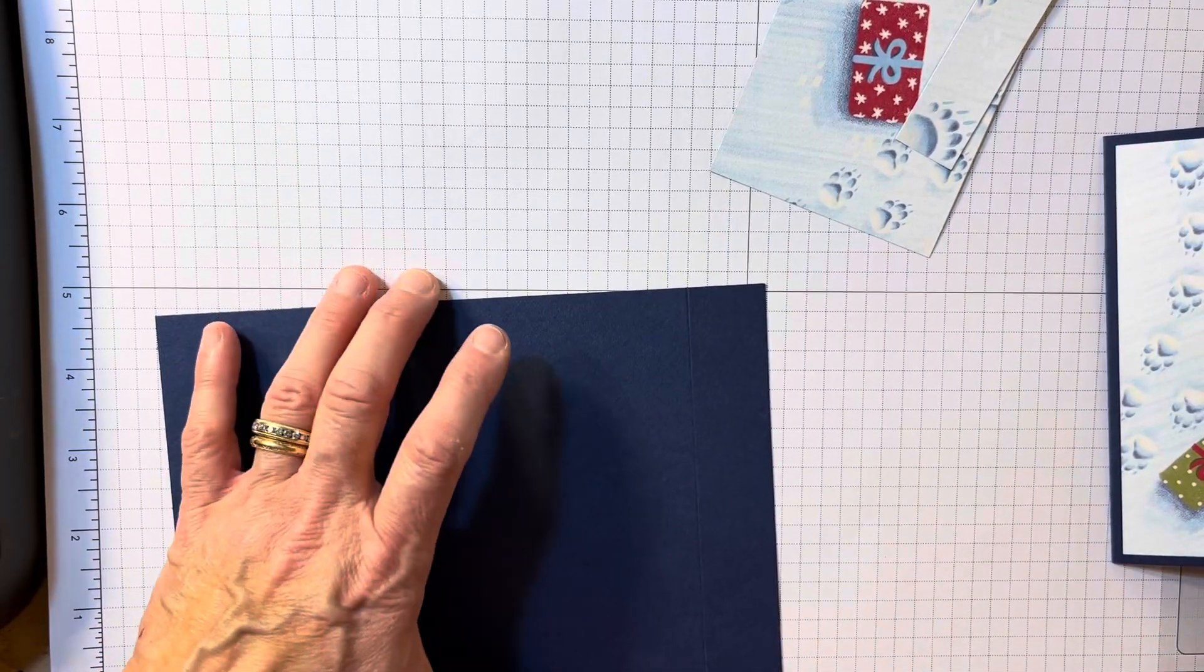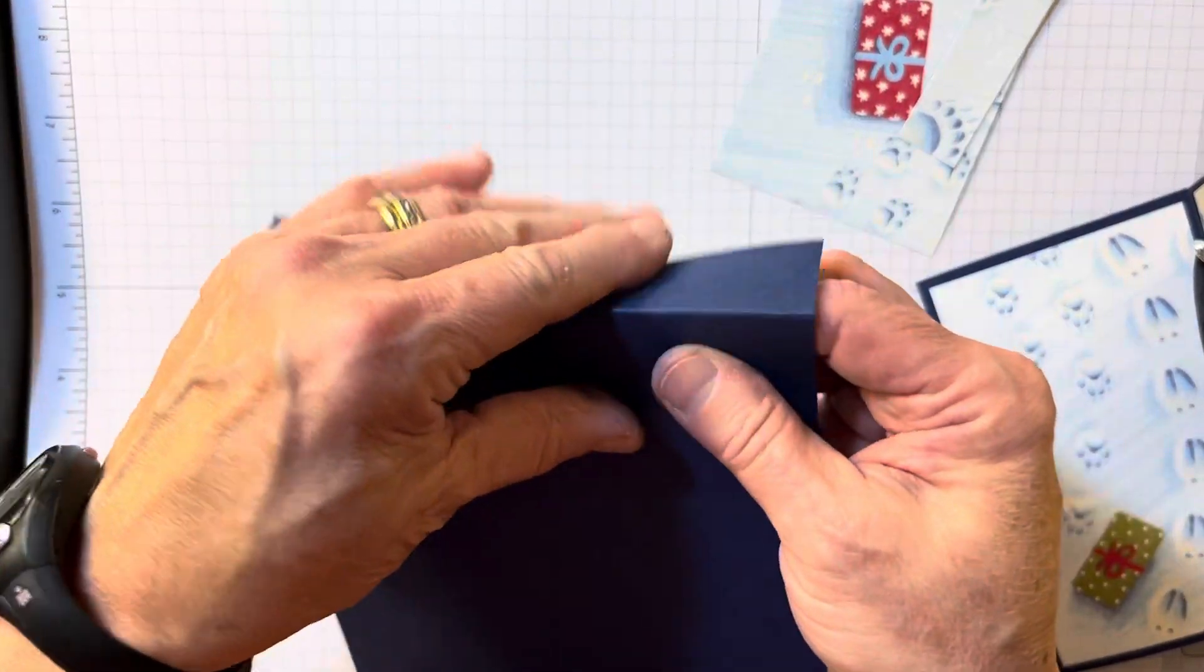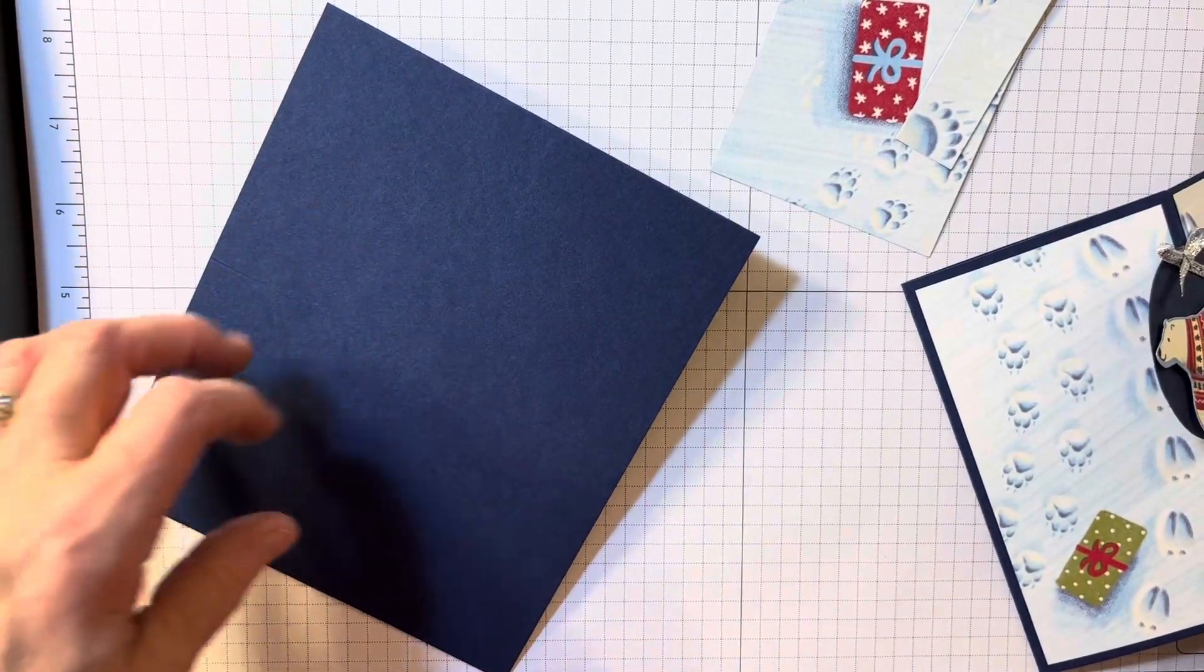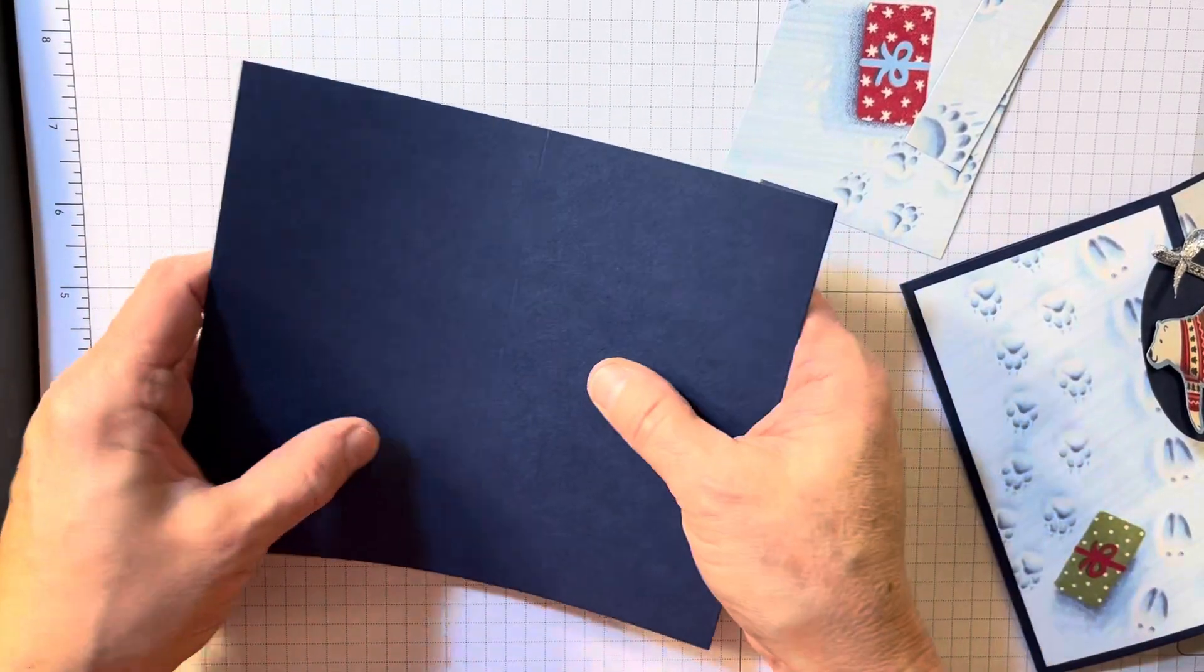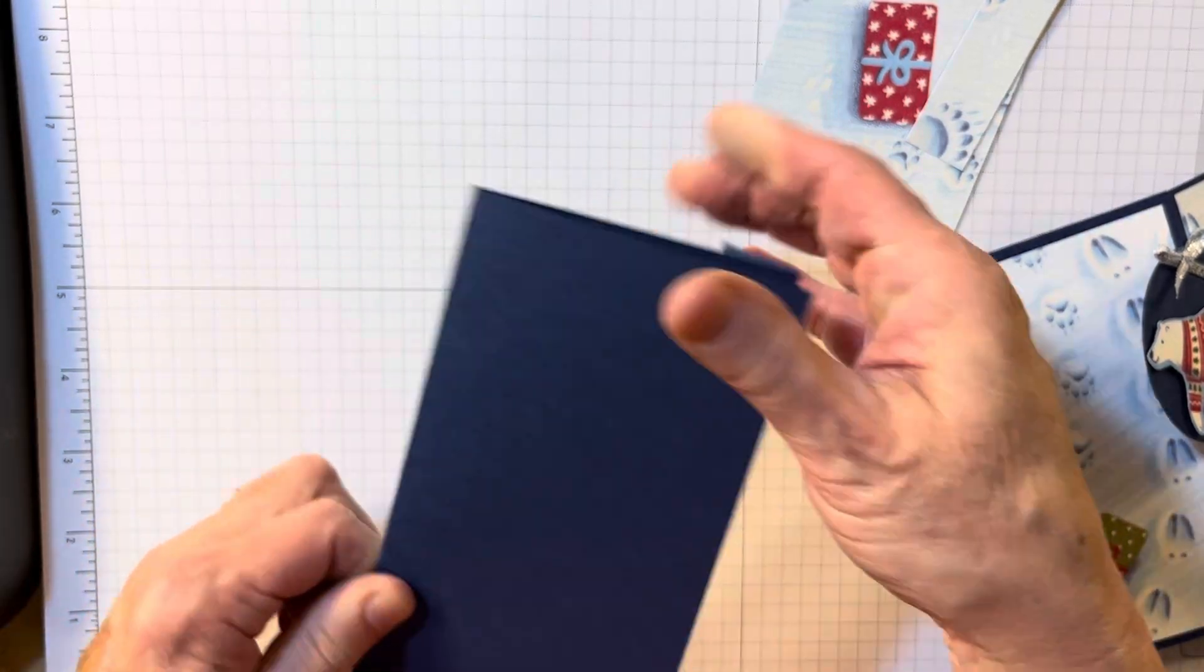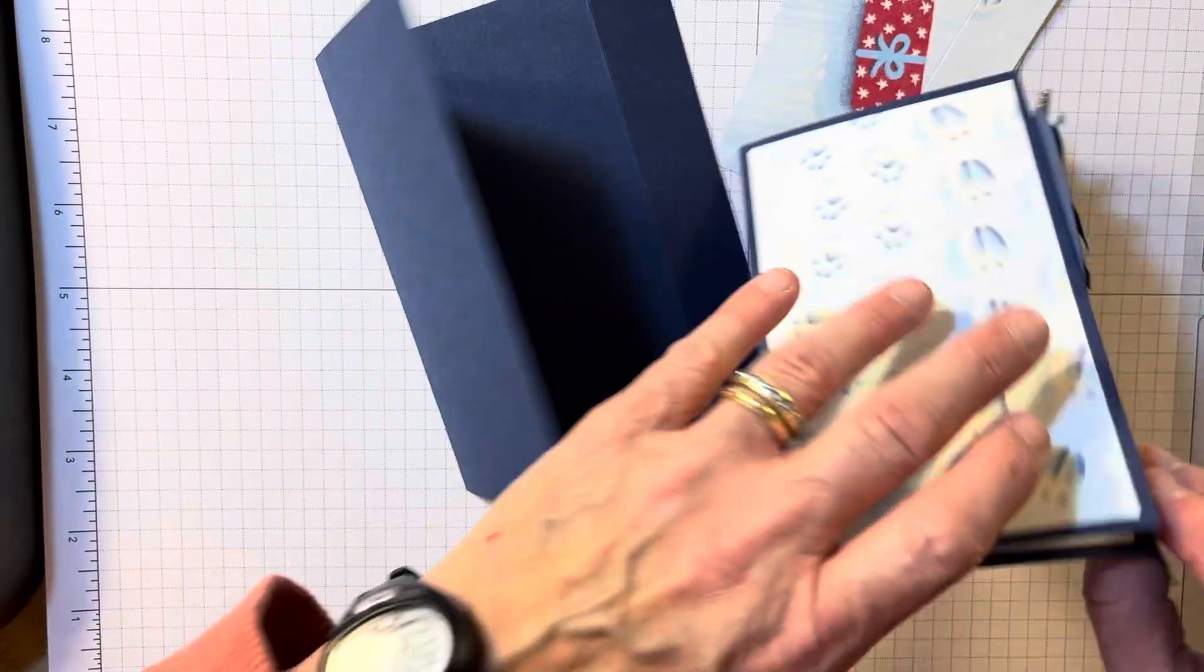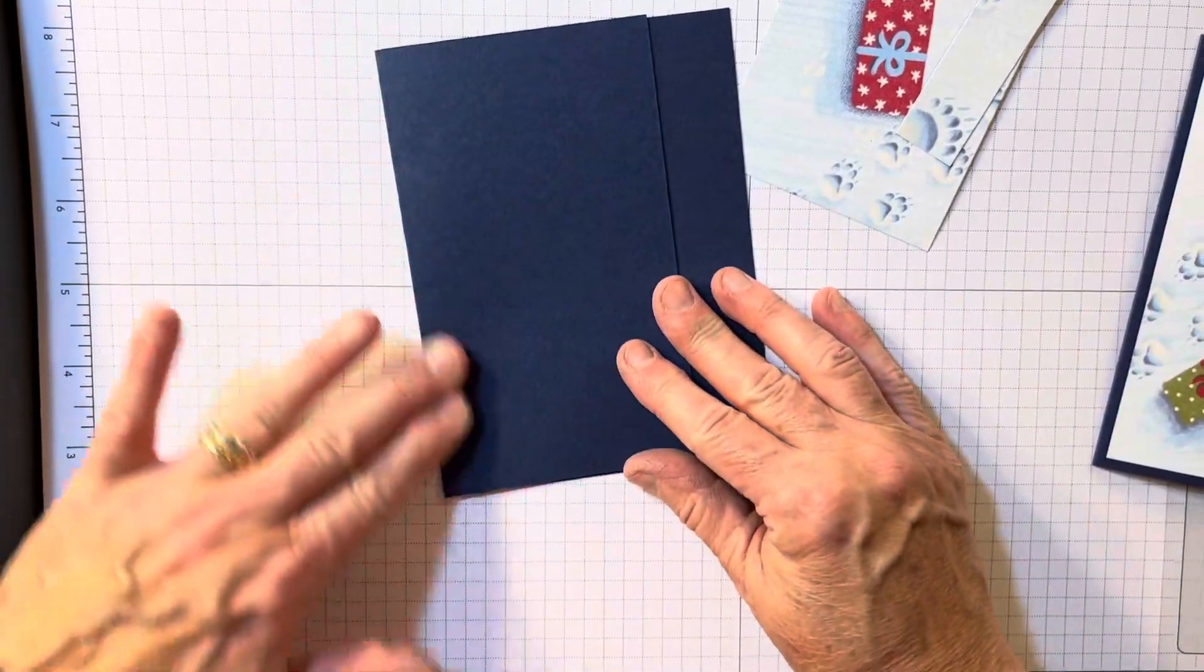This is going to be the back fold. So, this part right here is going to fold back and I just had my bone folder. So, that's the back fold. This is going to fold to the front. So, it opens like this and you see it kind of sits up but it's so nice because it'll stand. I like that part.